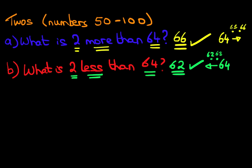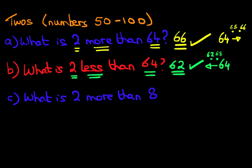Now let's look at a couple more examples. What is 2 more than 89? Using the same method, what number are we looking at? 89. So let's write that down. Now are we going to count forwards or backwards? It's more than, so we are going to count forwards. How much are we going to count forwards? We are going to count 2 — so we got 1 here and 1 here.